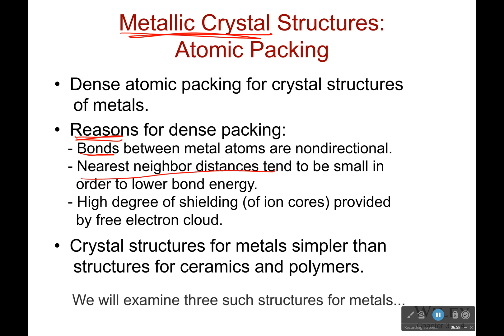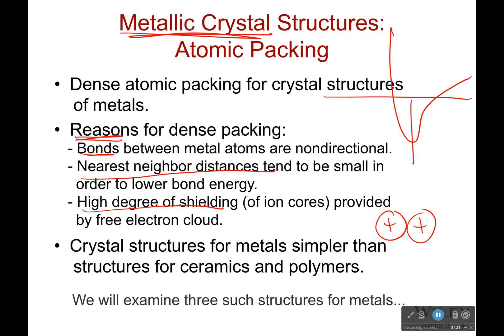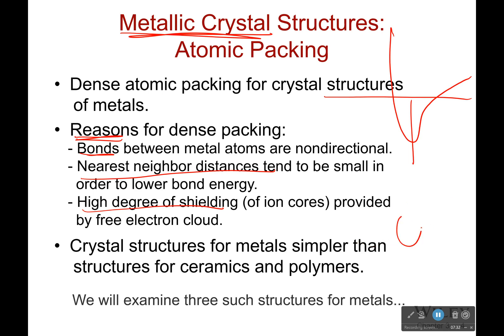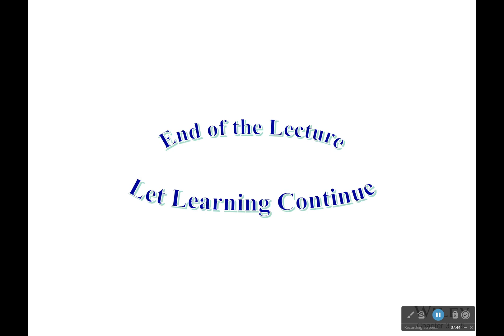The nearest neighbor bond distance tends to be small to lower the bond energy — there's a certain point where you have the best distance and you want to stay there. Also, there's a high degree of shielding of the ion cores because there are so many electrons, which means all these positively charged atoms can be very close together — they don't even see each other. Since metals are just one component type, they're much simpler structures than ceramics or polymers. We're going to examine three structures of four different metals next time. I hope this helps, and I'll see you all next time as we jump into our first crystal structure. Have a wonderful day.